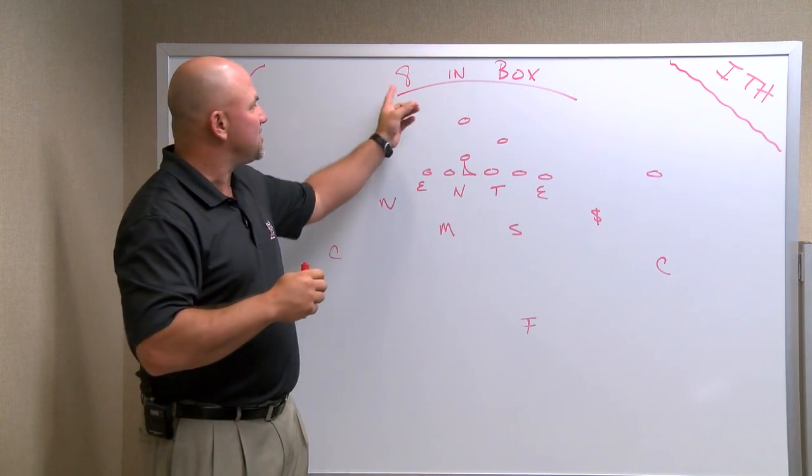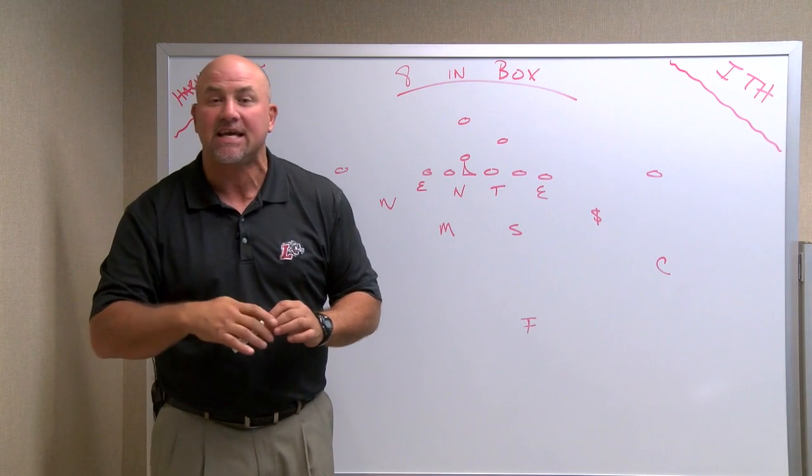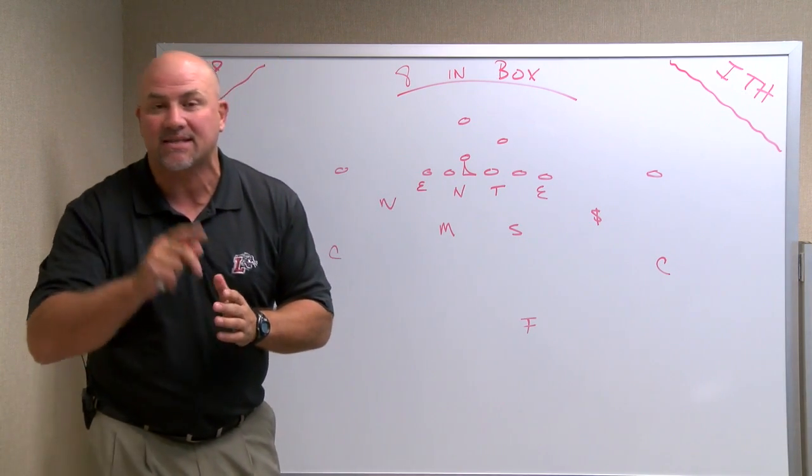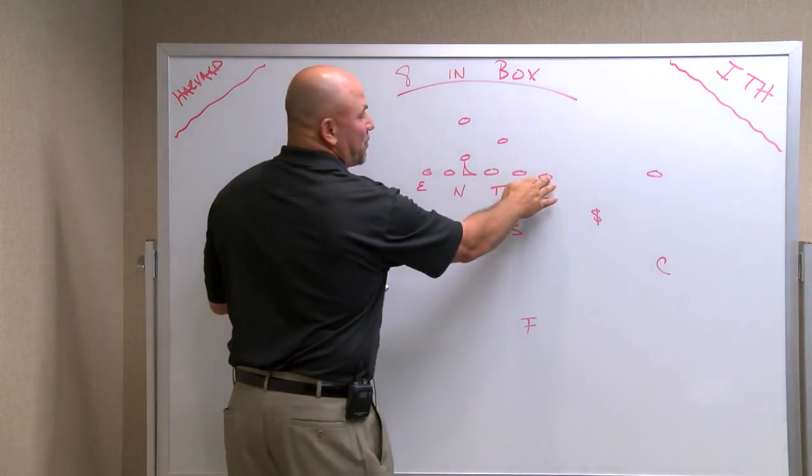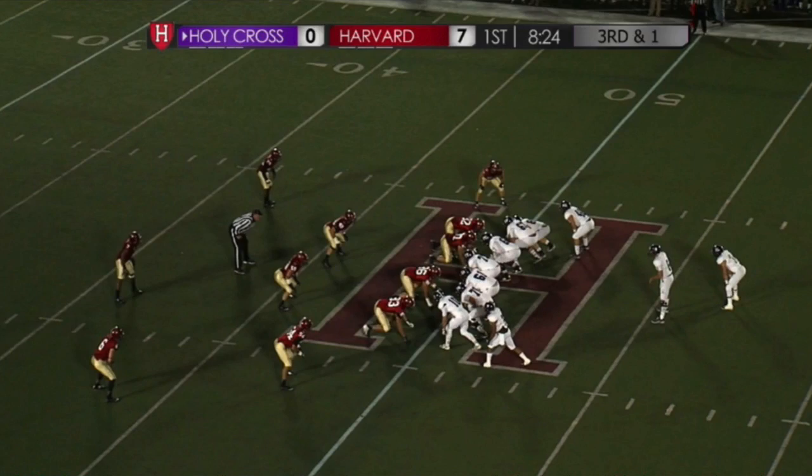And what Harvard does is they're going to put 8 in the box regardless. Very stubborn defensively. They do not want to get out of 8 in the box. Let me show you. If Lafayette lines up with a tight end, fullback, tailback, they don't do it very often, you're going to see 8 in the box.